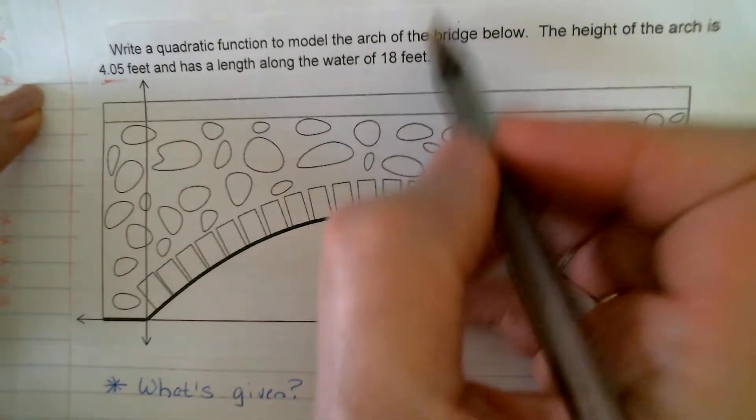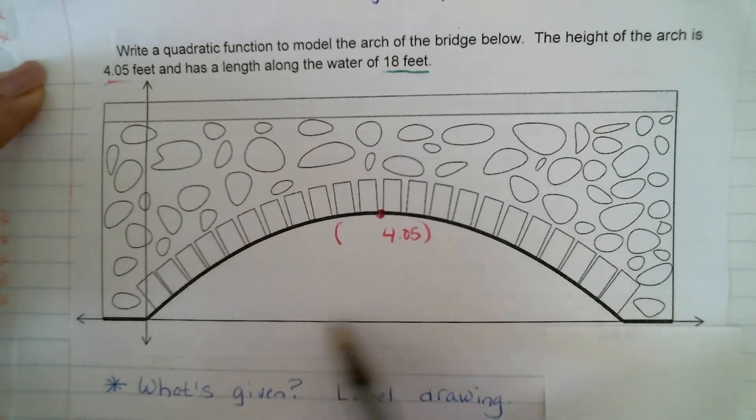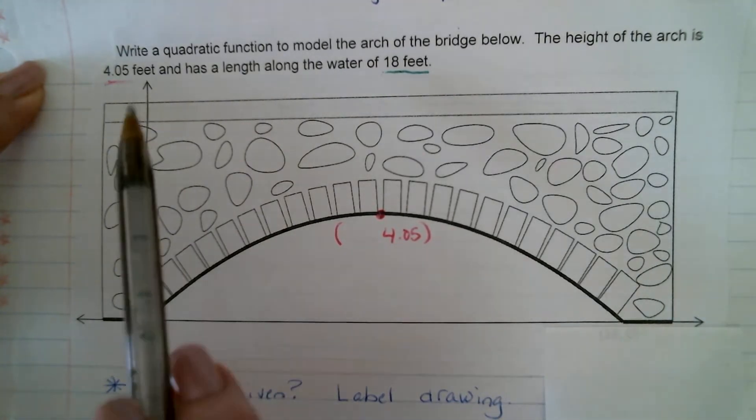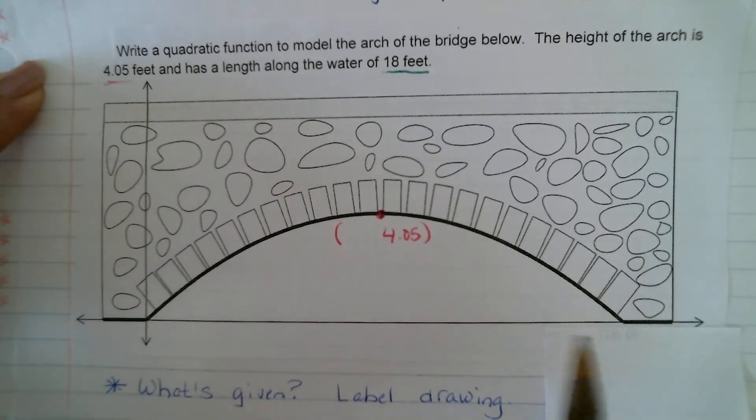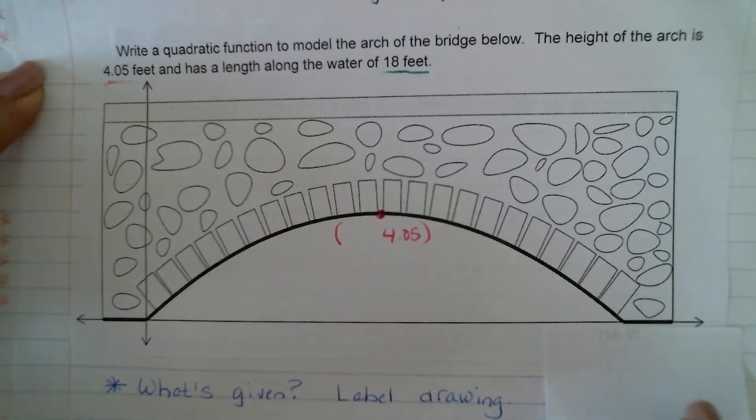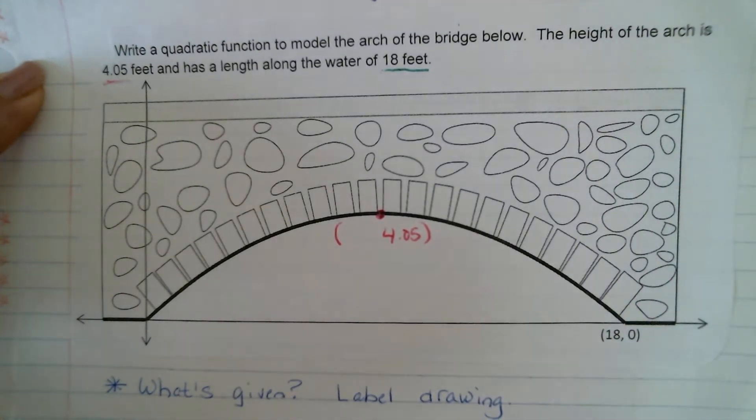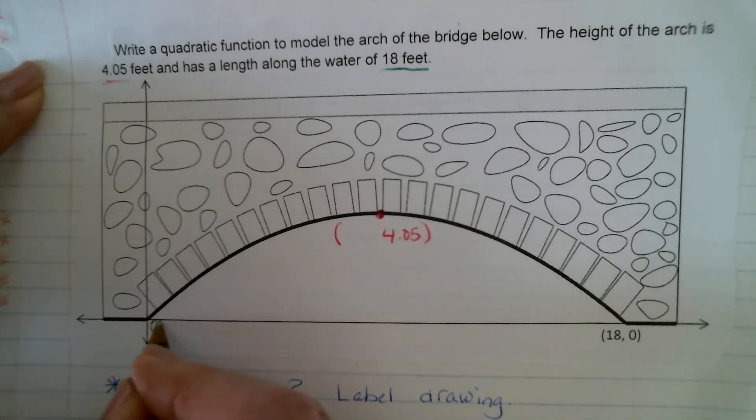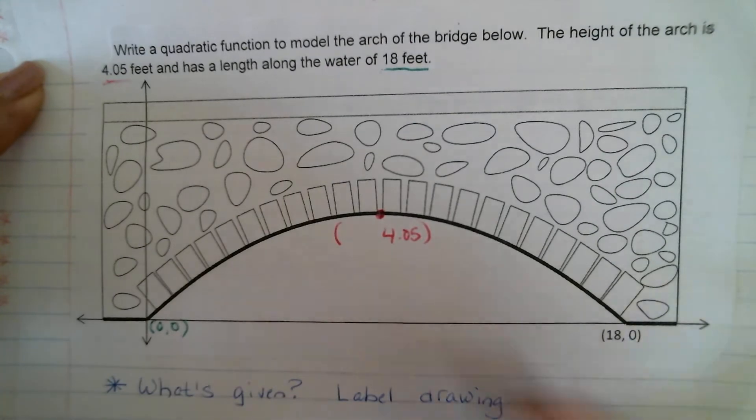The other thing they gave us was that the length along the water here was 18 feet. So, if this is our x value, when y is 0, we would label it like this, right? Oh, it's our starting point, right? So, that's 0, 0. Here's our 18.